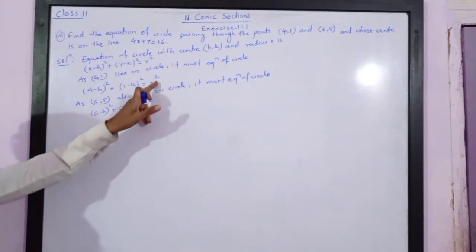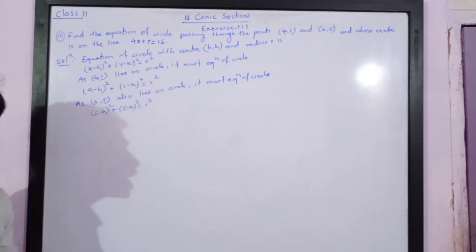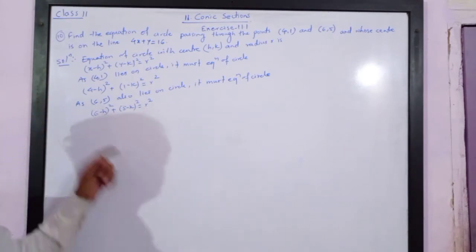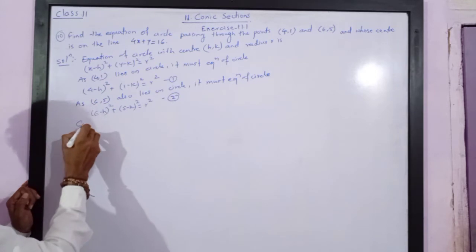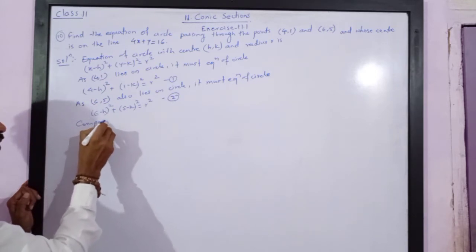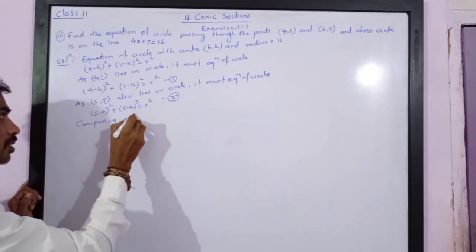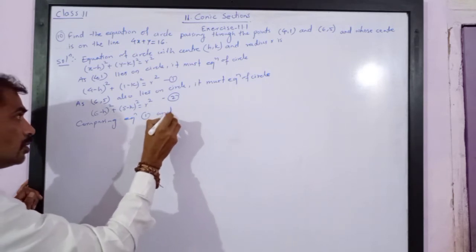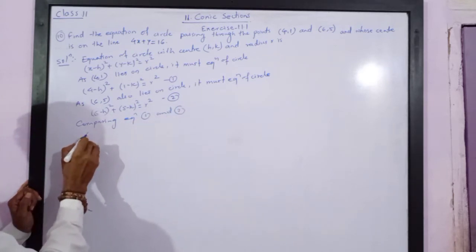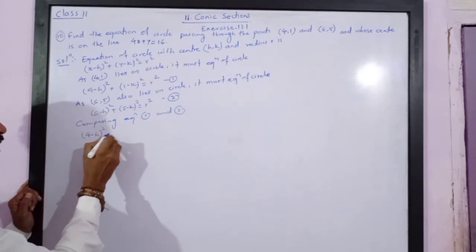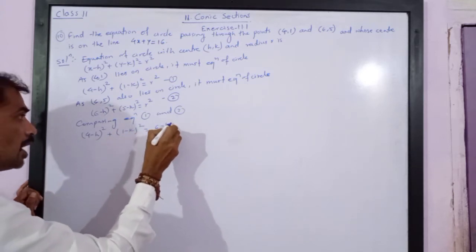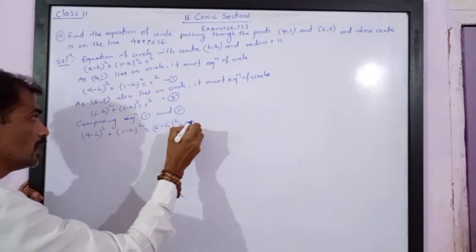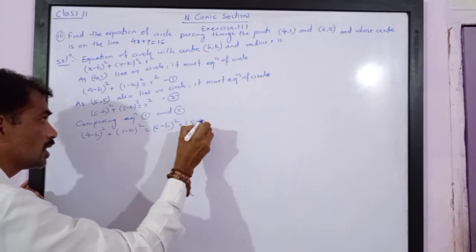Now, both of these equations are equal to r². So if the right-hand sides are the same, the left-hand sides must also be equal. Comparing equations 1 and 2: (4 − h)² + (1 − k)² = (6 − h)² + (5 − k)².